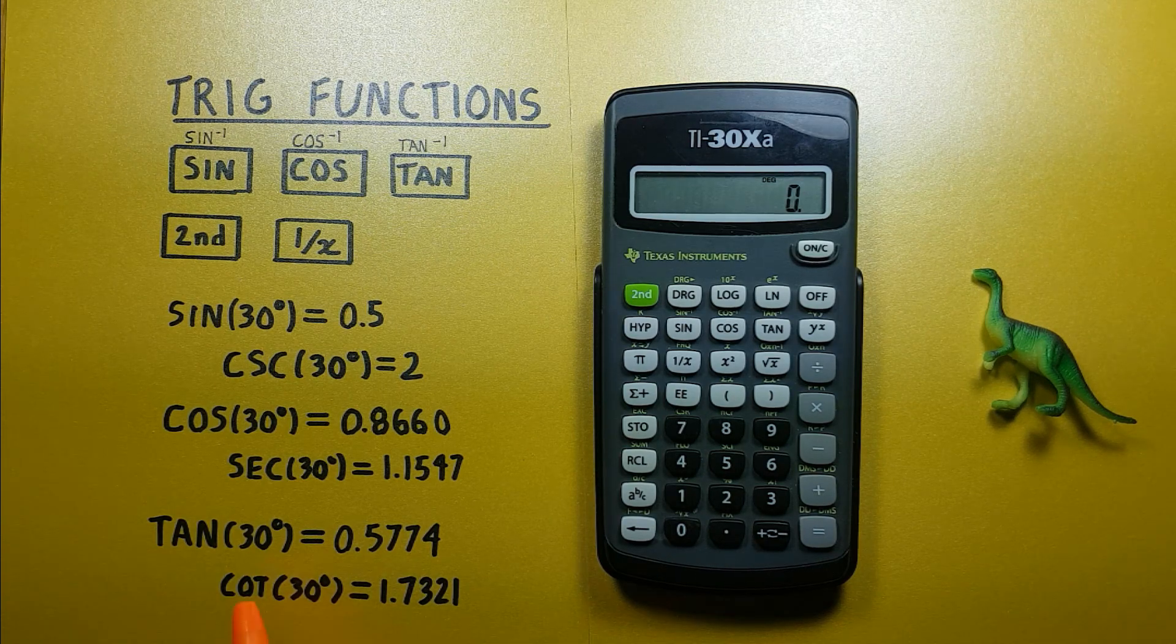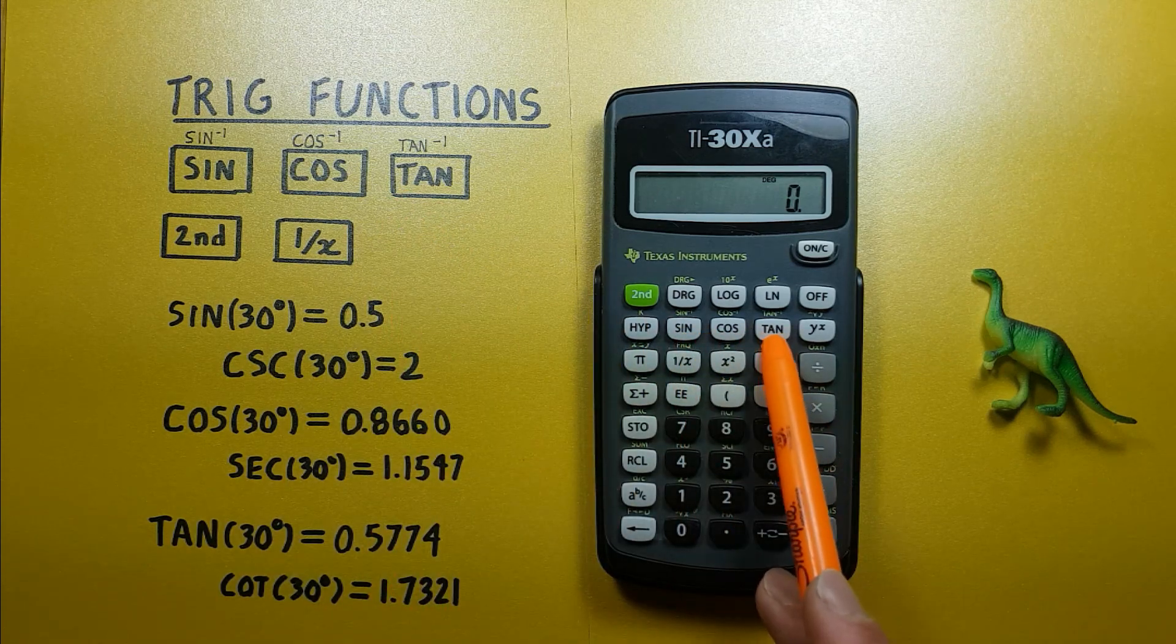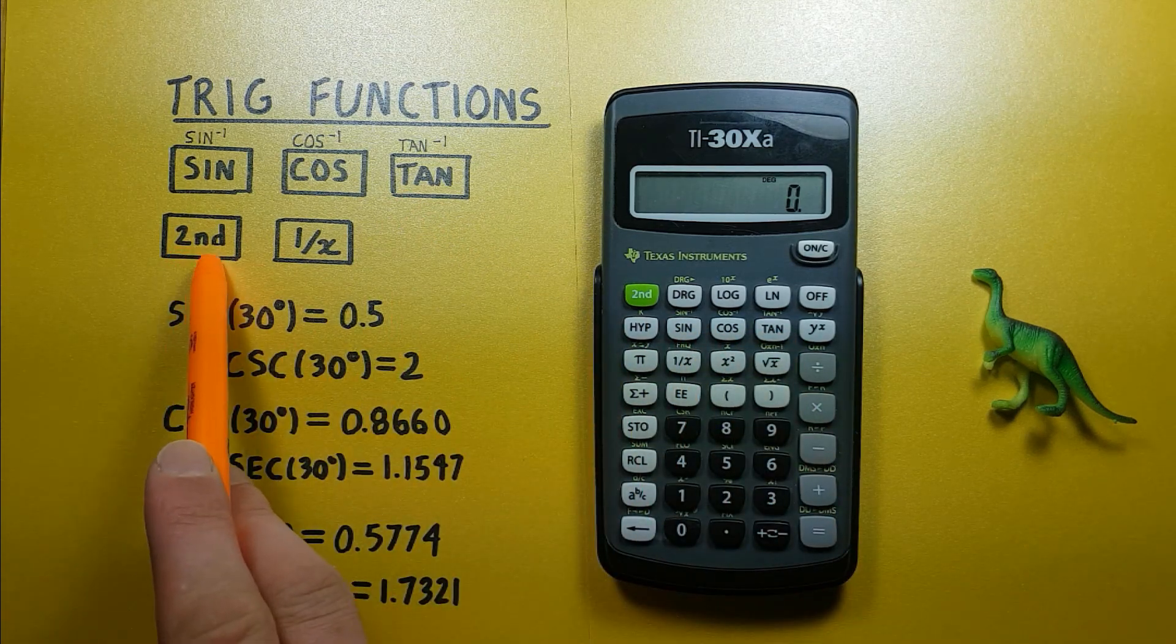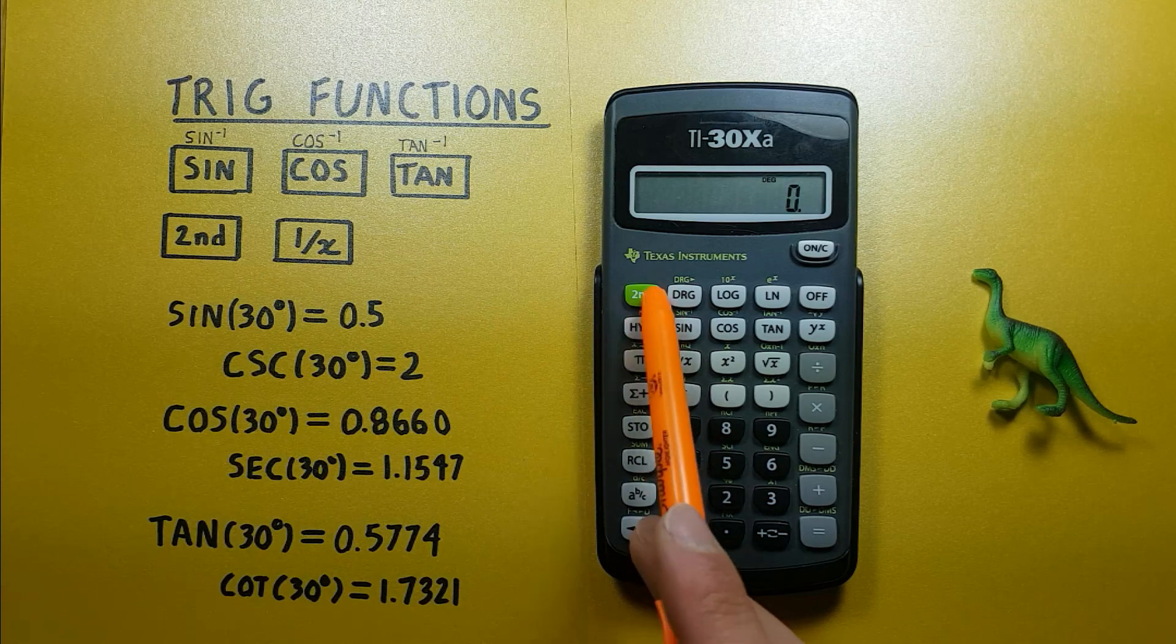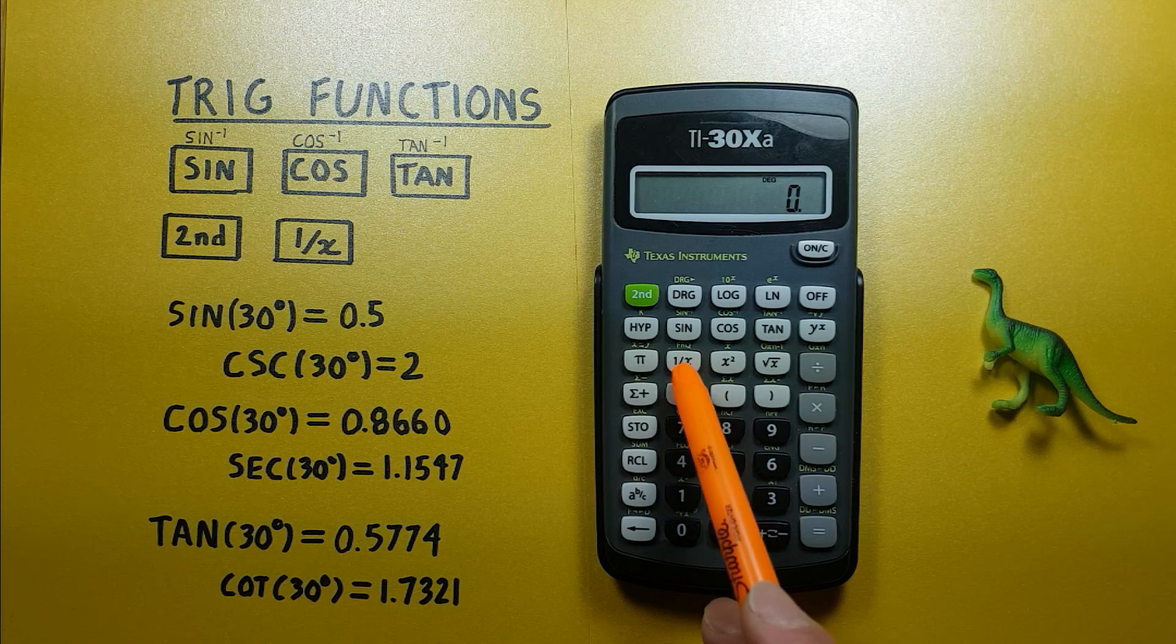To do this we'll be using the sine, cosine, and tangent keys located here, as well as the second function key that looks like this and is located here, as well as the inverse key that looks like this and is located here.